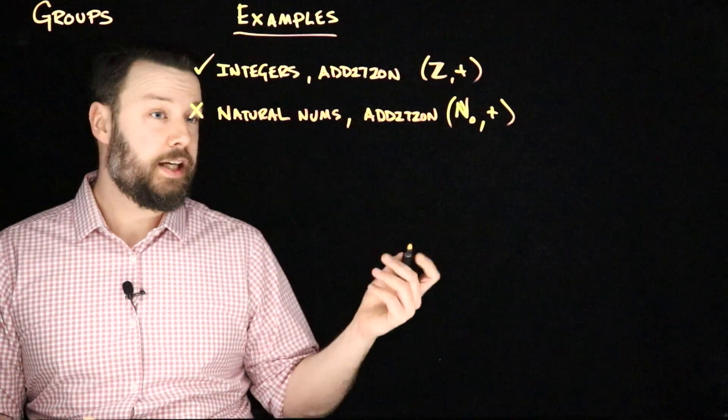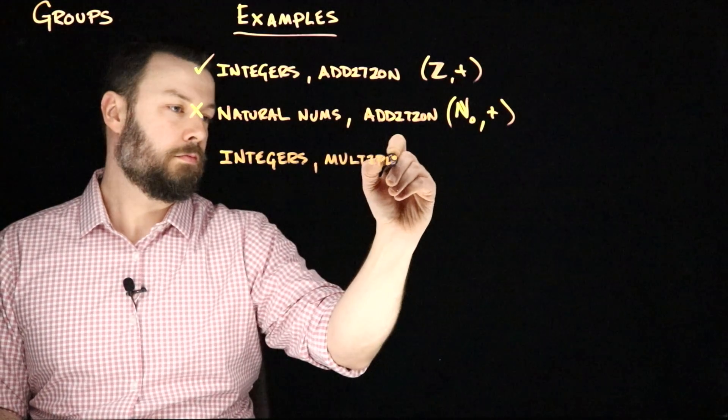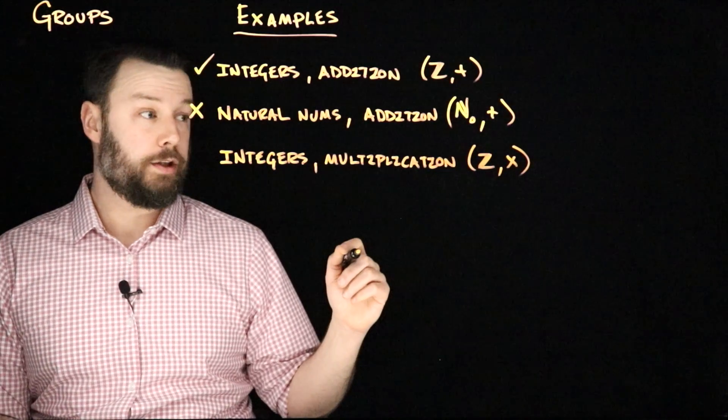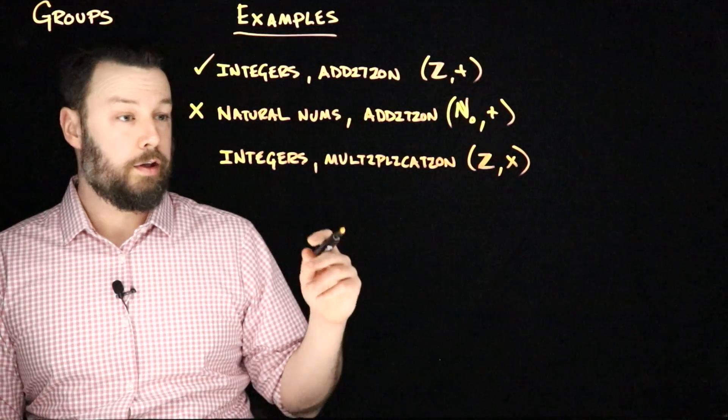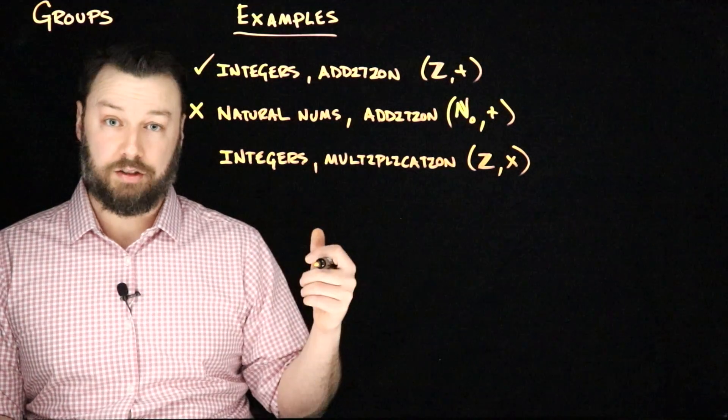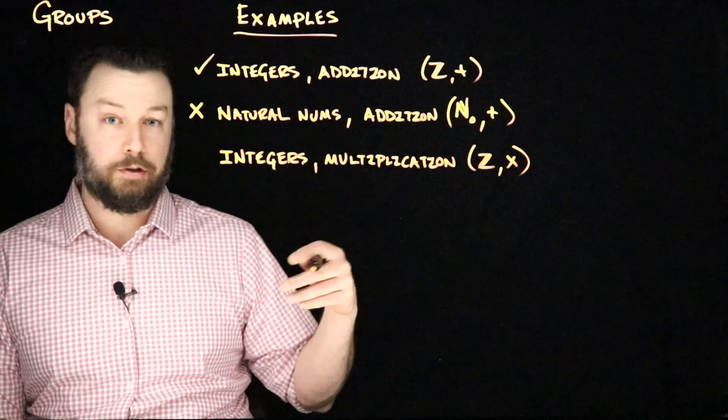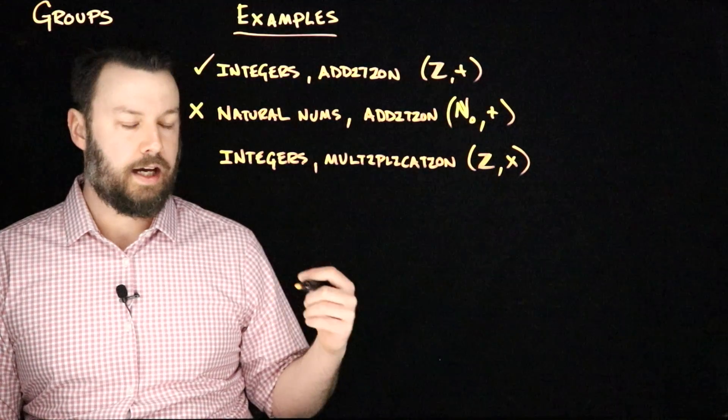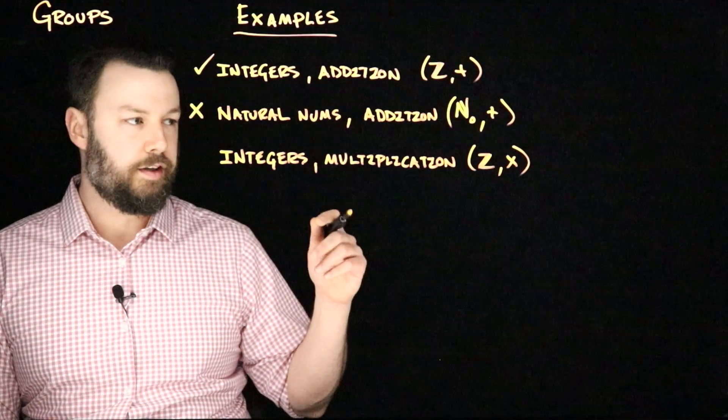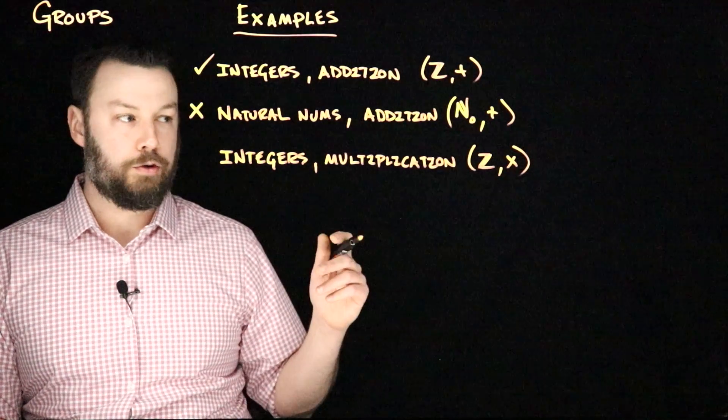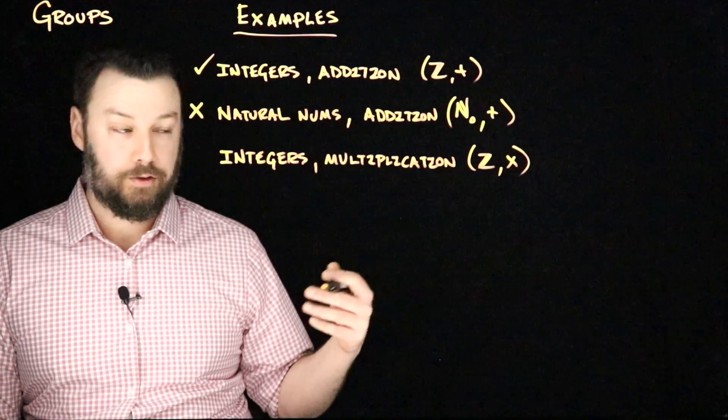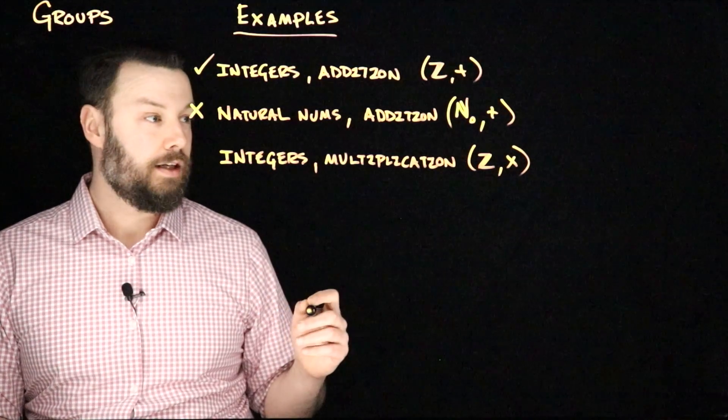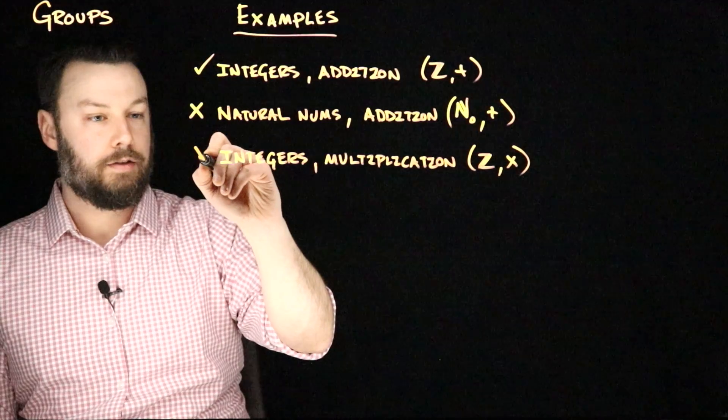What about the integers and multiplication? So Z again, but with multiplication as our binary operator rather than addition. If I multiply two integers, I get another integer. That's good. It has a neutral element, which is one. That's good. If I multiply five by one, I get five back. But it doesn't look like it has inverses, right? Because what is the thing that I need to multiply five by in order to get one? Well, one fifth. That's a fraction, and of course, that's not in the integers. So this candidate does not actually have inverse elements in general, and so it is not a group.